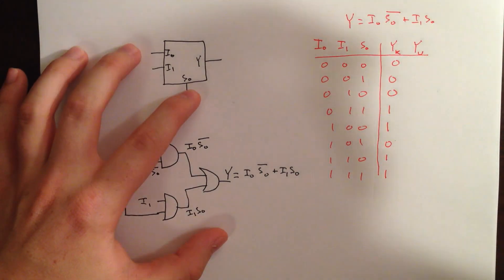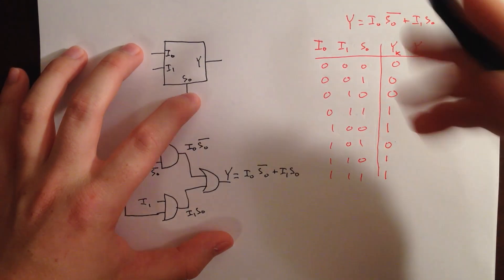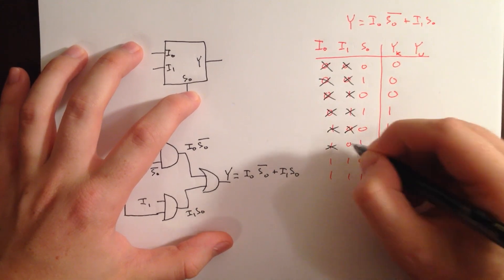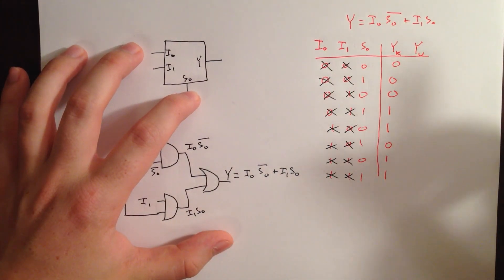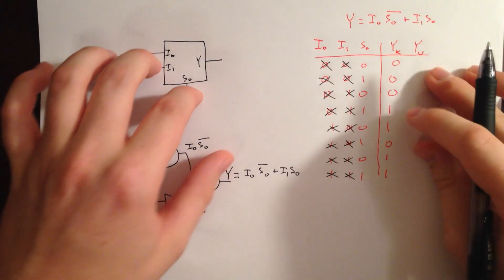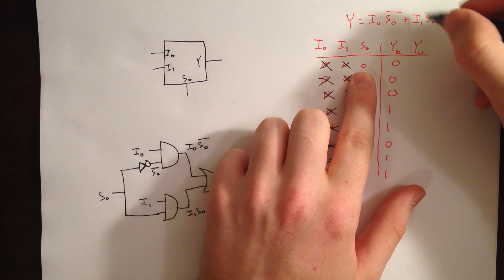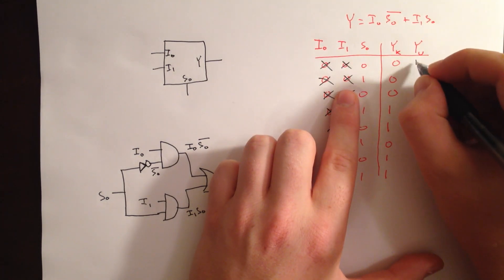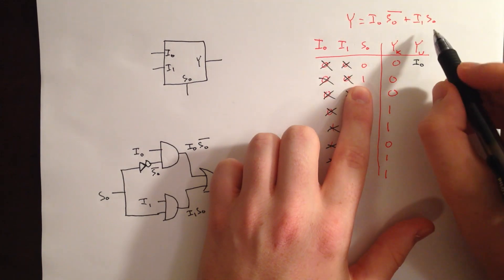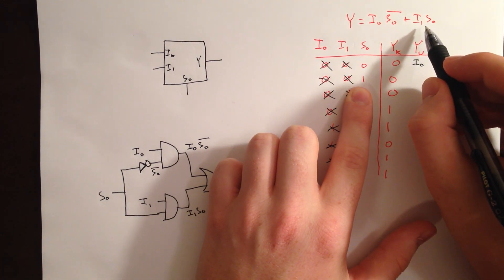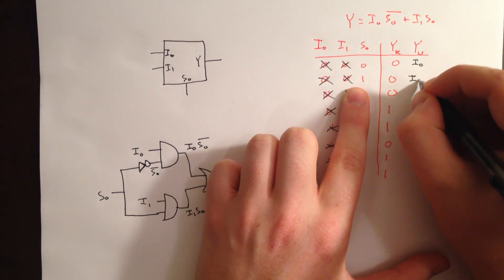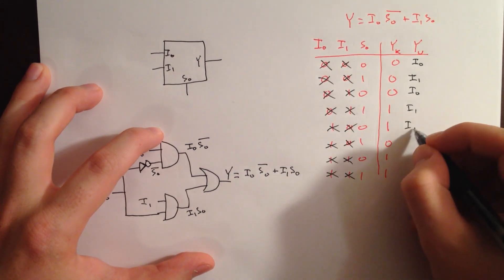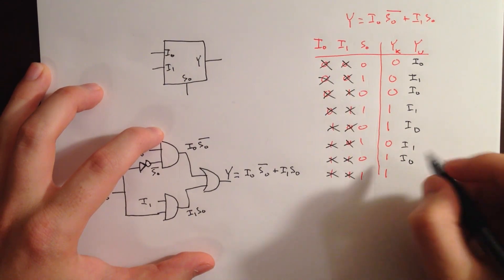Now let's say we don't know the values of I0 and I1, so we'll go ahead and just put X's through these — it could be a 1 or a 0, that's why we use the X. So if our S0 is 0, then we don't really care about this AND — we only care about the other AND because it's going to be a 1. Our output Y is just going to depend on I0. And if our S0 is 1, then we don't care about that AND, only this one, and our output Y is only going to depend on I1. And since S0 keeps alternating, we're just going to have our alternating I0 and I1.